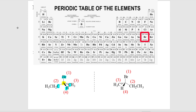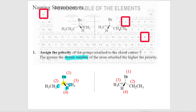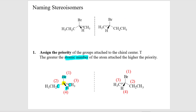Hydrogen tends to be the lowest priority if it appears off one of these chiral centers. Notice, though, that we can have a tie between carbon and carbon. Now we've got to go to war — lay down the next layer. I'll show you why the carbon on the left is priority two and the carbon on the right is priority three based on this layering effect.